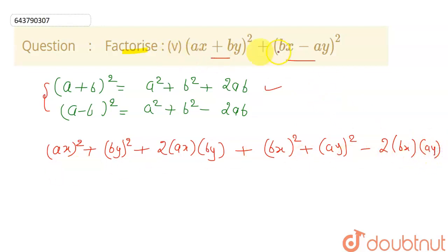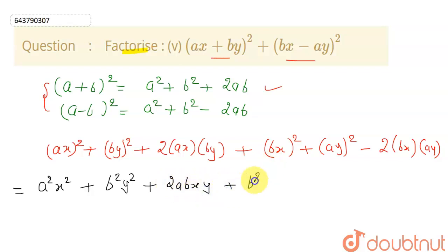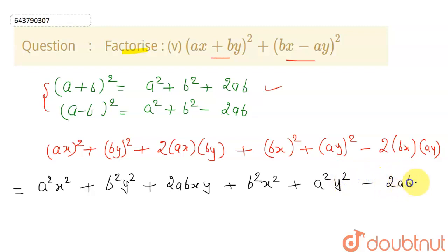So we have just opened both expressions. Now let me rewrite this equation. This will be: a squared x squared, plus b squared y squared, plus 2abxy, plus b squared x squared, plus a squared y squared, minus 2abxy.